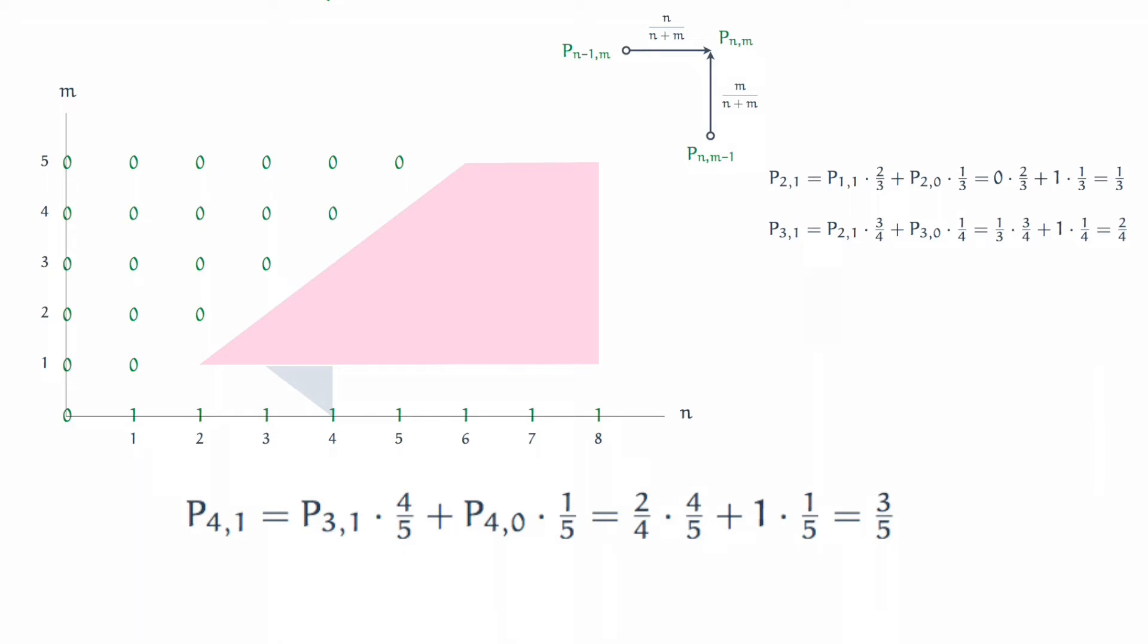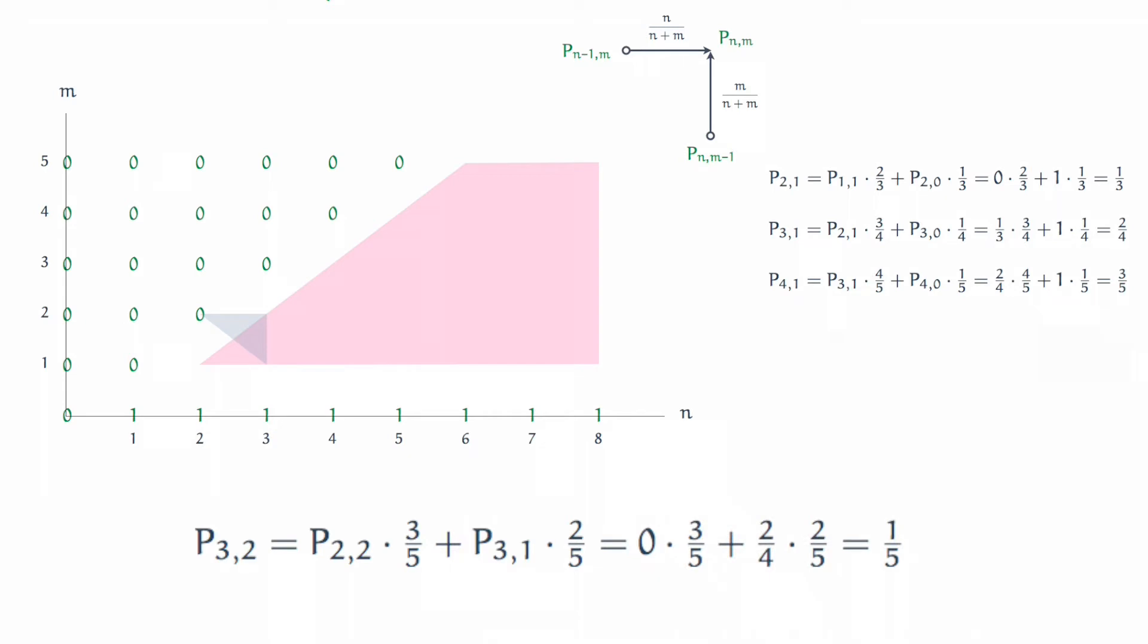Now, let's try a different value for m. Say, m equal to 2. What if n is 3 and m is 2? Again, the point south is n is 3 and m is 1. Oh, but we know this value. The point to the west is n is 2 and m is 2. Oh, but we know this value as well. Plug it in, and we now have a new probability, 1 in 5. What about the point 4, 2? Jane gets 4 votes, Bob gets 2 votes. Go through the same process. We now find it's 2 in 6.